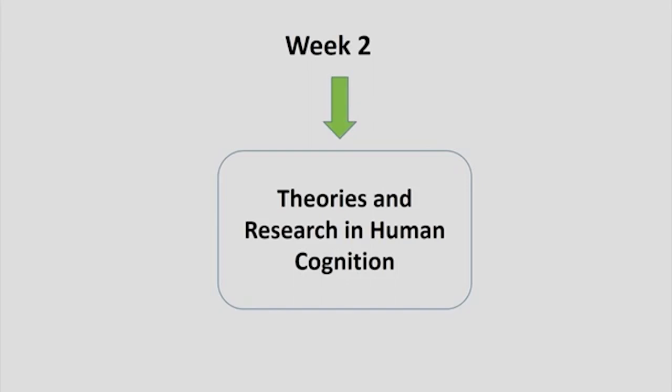In the second week, we studied theories and research in human cognition, looking at various research methodologies used for studying cognition. The three primary research methodologies were the behavioral approach, the correlational approach, the causal approach, and the modeling approach. In the behavioral approach, we primarily used three different types of measurements: the measurement of accuracy, the measurement of reaction time, and the measurement of judgment. These three criteria can be used to design experiments in cognitive psychology.